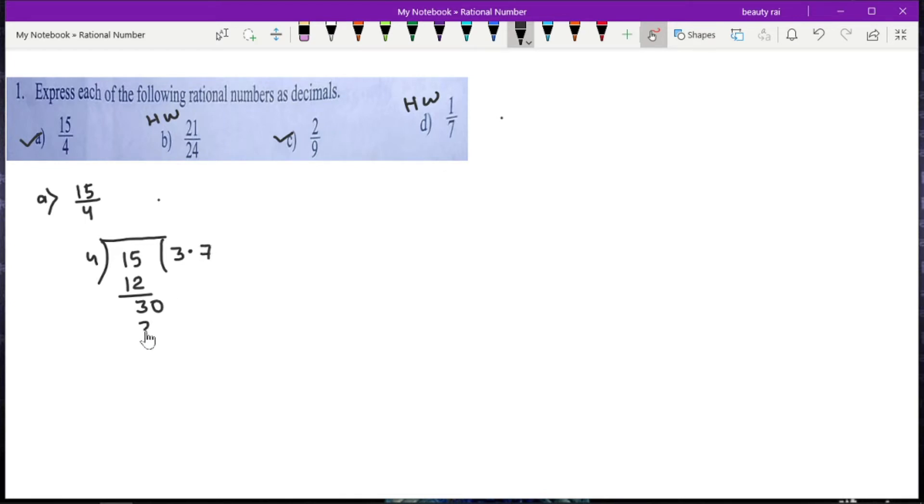Remainder is 2. Now we get another 0. 4 times 5 is 20. So we got the answer 3.75 and our remainder is 0. This means that this is a terminating decimal.